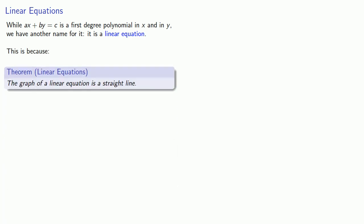Now, we could say that ax + by = c is a first-degree polynomial in x and in y. But we also have another name for it. We call it a linear equation. And that's because the graph of a linear equation is a straight line.